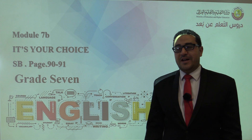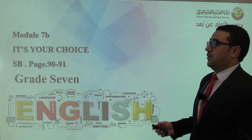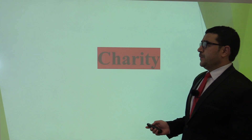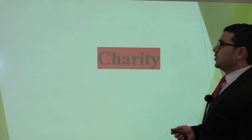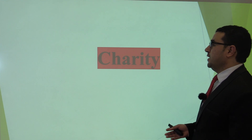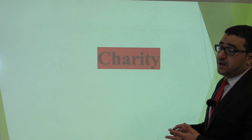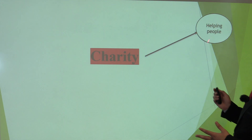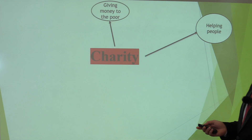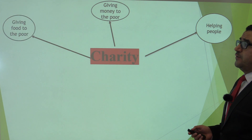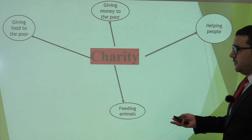Hello, this is Tenos and welcome to the second part of our reading lesson. In the first part, we talked about the word 'charity' and its meaning, which is to help others. We also talked about the main forms of charity: helping people, giving money to the poor, giving food to the poor, and feeding animals.